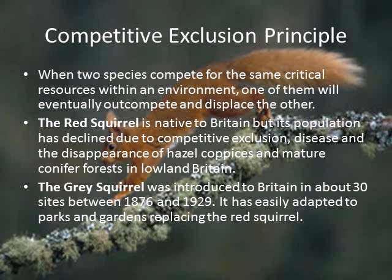The competitive exclusion principle states that two species that compete for the exact same resources cannot stably coexist. An example of the competitive exclusion principle is the red and grey squirrels in Great Britain. When the grey squirrel was introduced to Britain, they easily adapted, taking the red squirrels' resources and causing their population to decline.